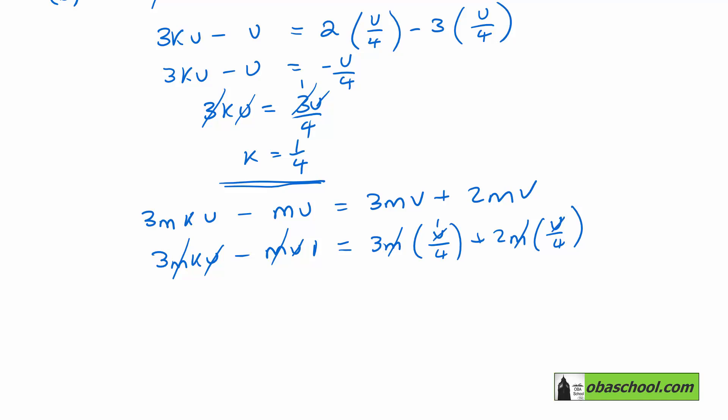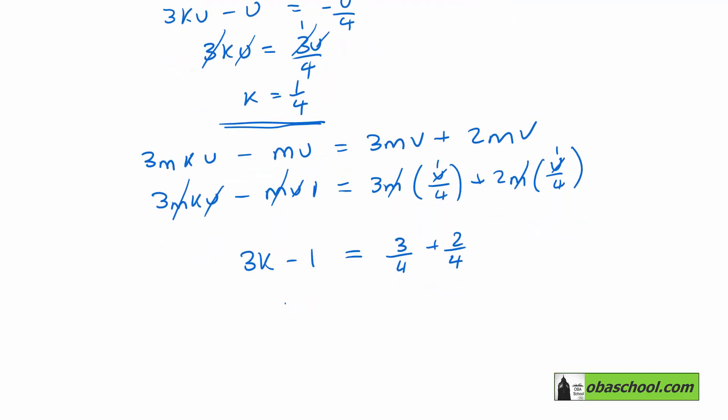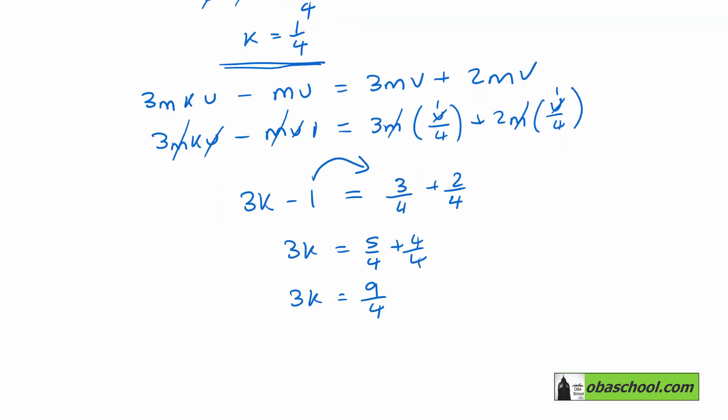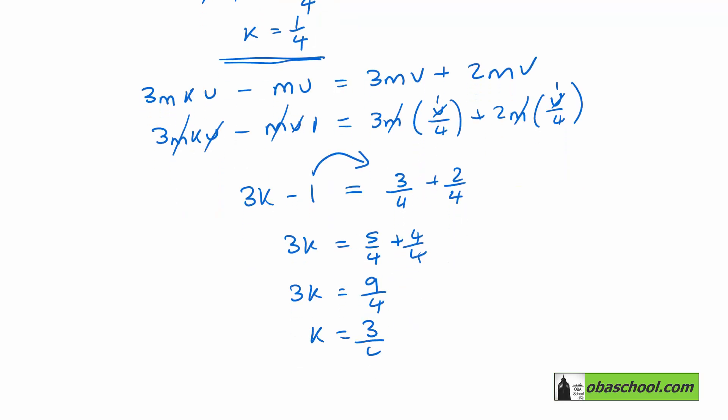And that's a 1, and that's a 1. So 3K take away 1 equals 3/4 plus 2/4. So 3K equals 5/4 plus 4/4—that's taking the 1 over to the other side. 3K equals 9/4, and that gives me K equals 3/4.